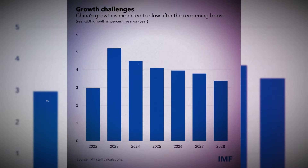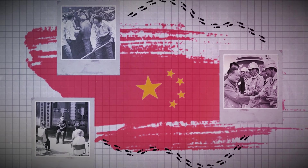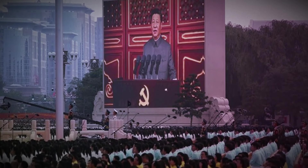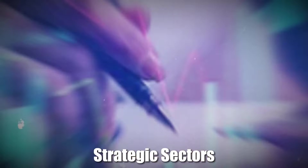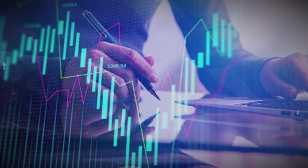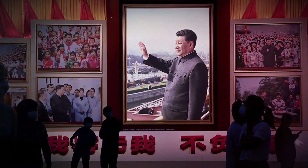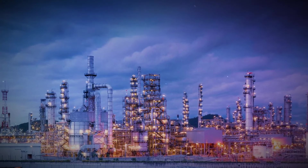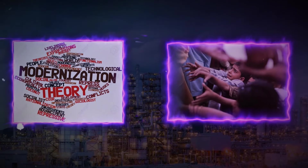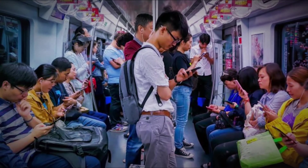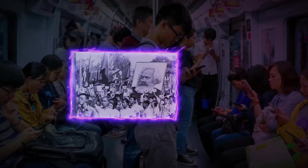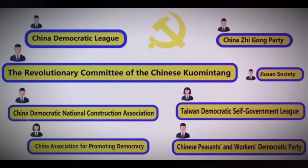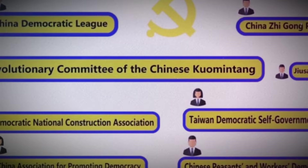Today, China's economy is a unique blend of socialism and capitalism, often described as socialism with Chinese characteristics. While the state retains control over key industries and strategic sectors, the market plays an increasingly important role in driving growth and innovation. The impact of communism in practice has been a mixed bag for China. On one hand, it provided the foundation for rapid industrialization, modernization, and poverty reduction. On the other, it led to periods of great suffering, upheaval, and lost potential. As China continues to evolve, it remains to be seen how its unique political and economic system will shape its future.